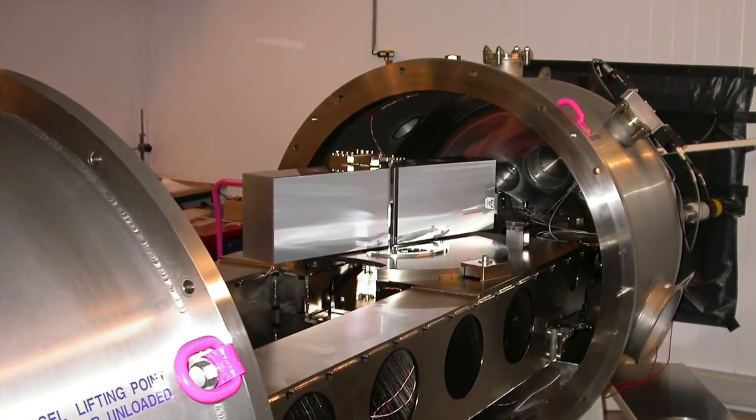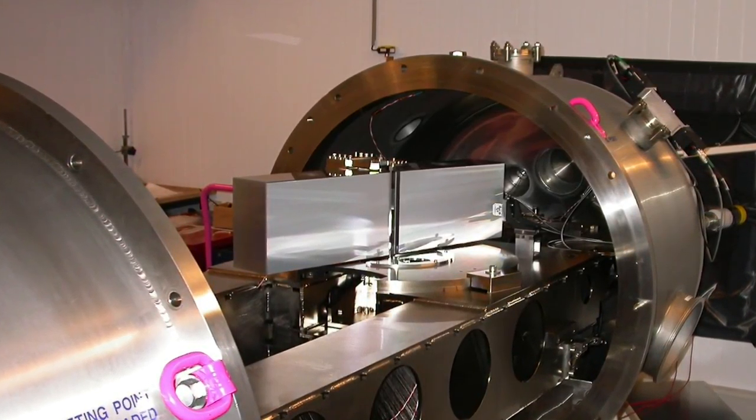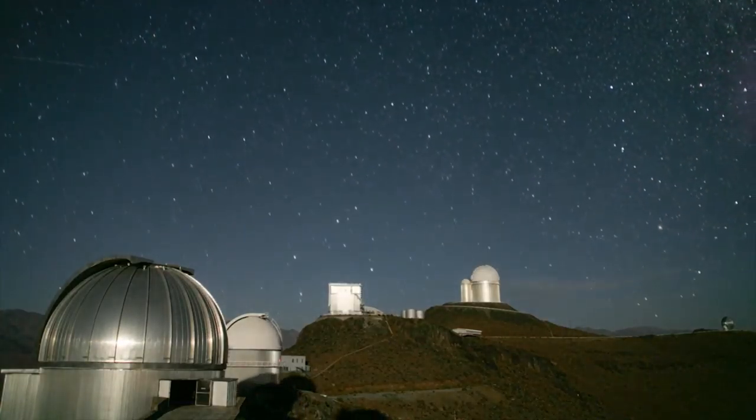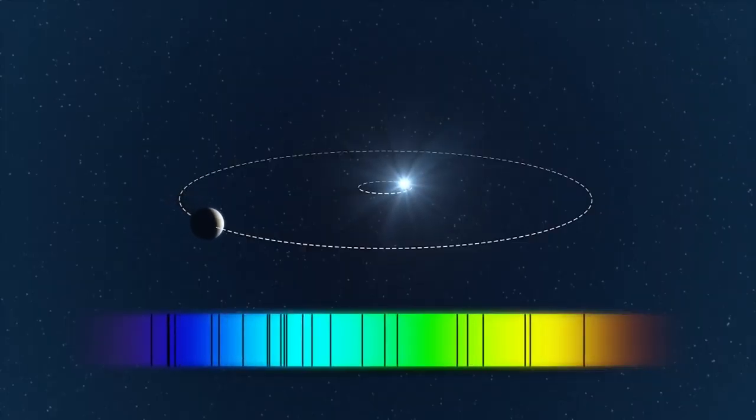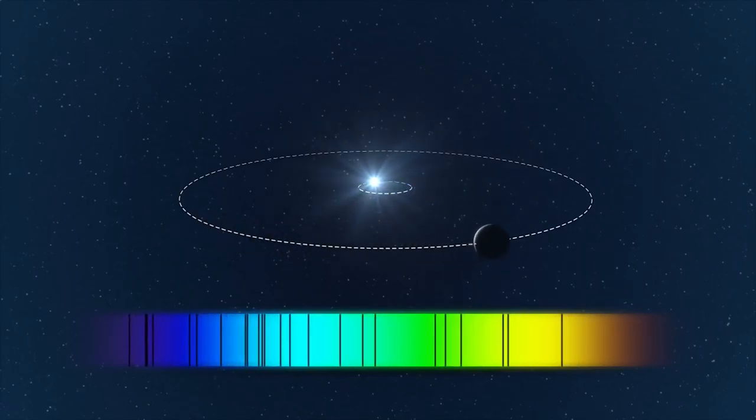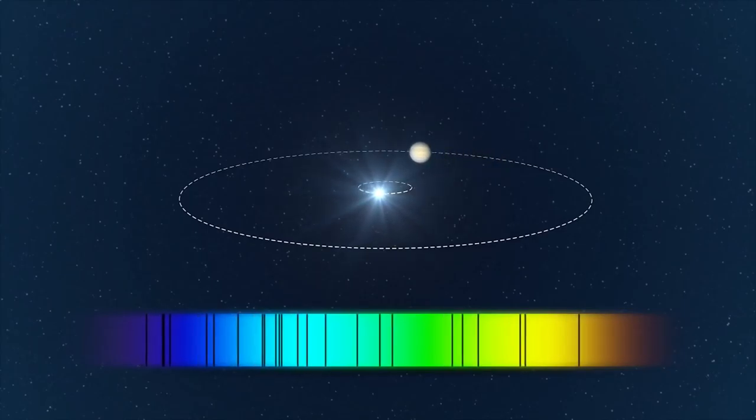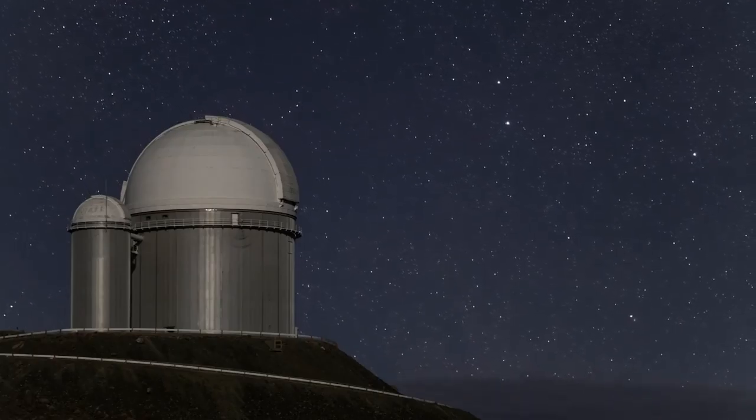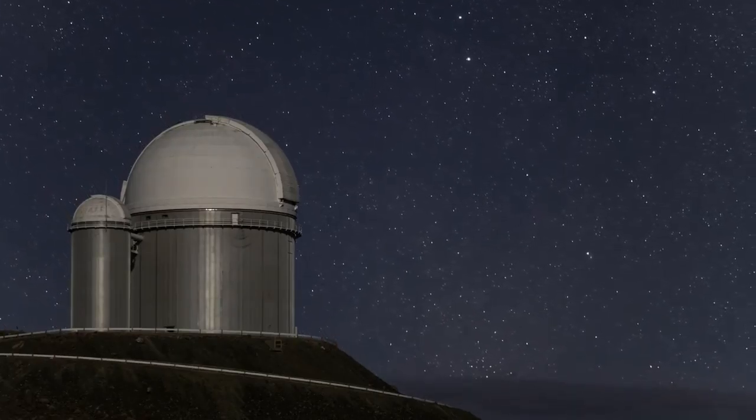One of these instruments is HARPS, the High Accuracy Radial Velocity Planet Searcher. It's located at ESO's La Silla Observatory in Chile. HARPS very accurately measures the Doppler shift of stellar spectral lines to look for the subtle signatures of exoplanets. But HARPS can also measure the polarization of spectral lines to detect stellar magnetic fields.